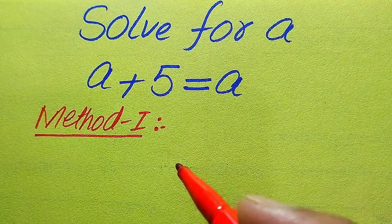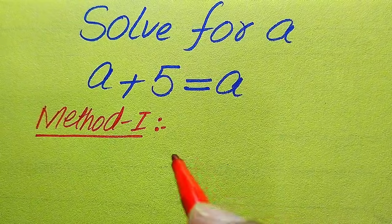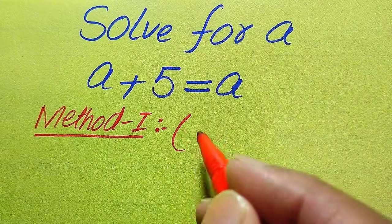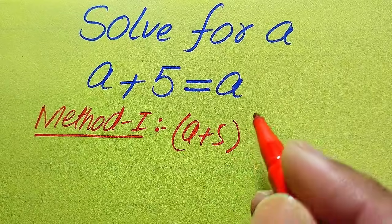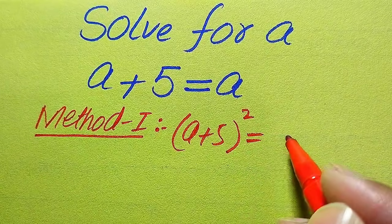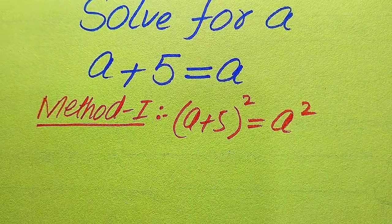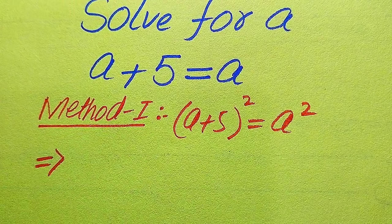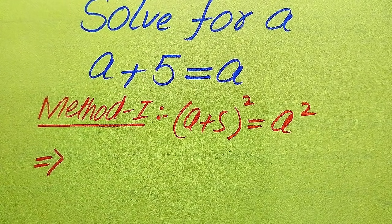Now we move towards the first method. In the first method, we square both sides of the equation. When we square both sides, it is written as (a + 5)² = a².